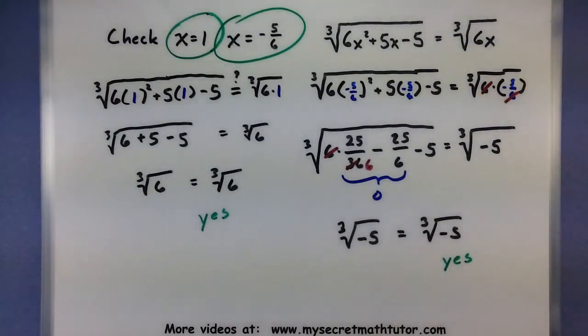All right, so you can see with these higher roots, you're really doing much of the same things for any type of radical equation. Isolate them as best you can, and use a power on both sides that matches the index. If you'd like to see some more videos, please visit MySecretMathTutor.com.